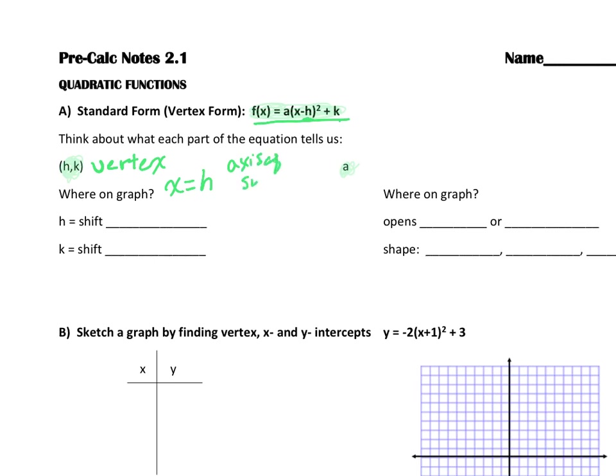Remember the h value, because it's inside the parentheses and attached with the x, tells us that we are either going to shift left or right.